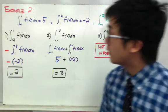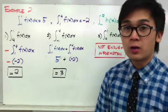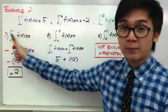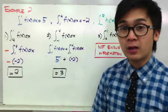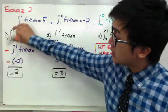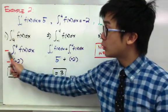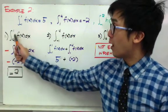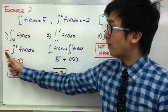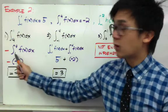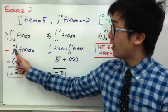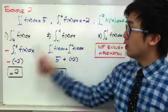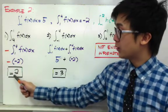For our first integral function, we need to evaluate f(x) dx from 4 through 1. Notice that the lower limit is actually higher than the upper limit. We can apply the property of integrals by switching the lower and upper limits, but the integral notation now carries a negative sign. So the integral of f(x) dx from 4 through 1 becomes negative of f(x) dx from 1 through 4. From the given problem, that integral equals negative 2, so we have negative 1 times negative 2, which equals positive 2.